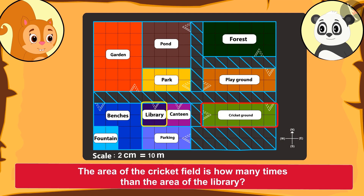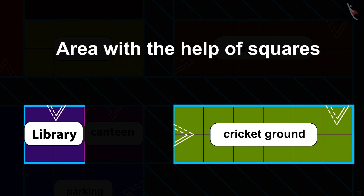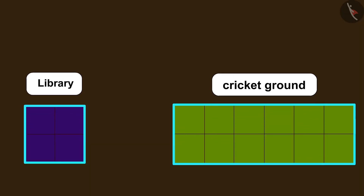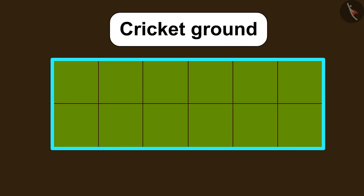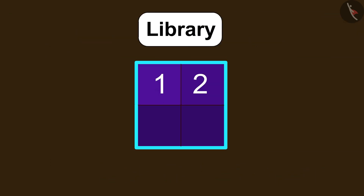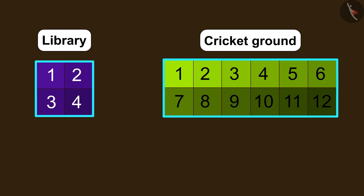Come, let's help Chanda find the answer. Kids, do you remember the process of finding the area of any given place using the method of squares? In this process, we can find the area of any given place using the number of similar squares that the respective place has. If we look at the cricket ground, it is made of 12 squares, while the library is made of only 4 squares.